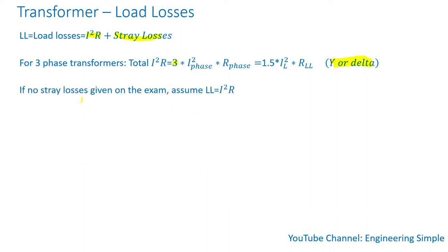During the PE exam, if no stray losses are provided, you can assume that the load losses are just I squared R.